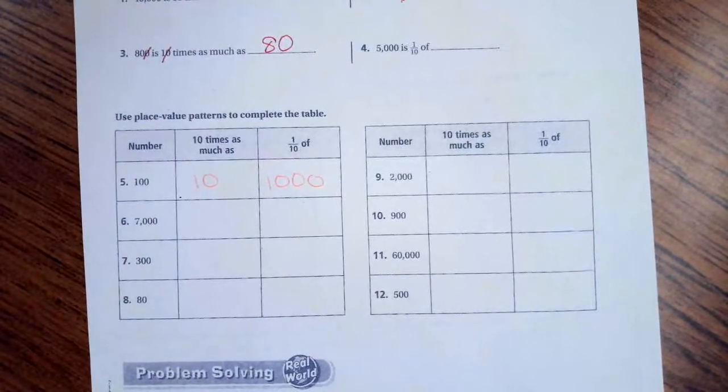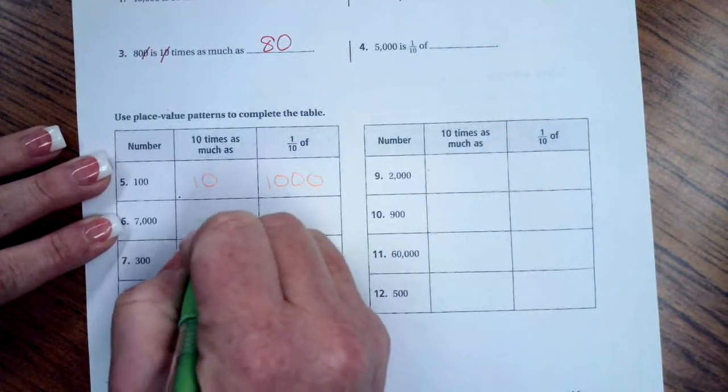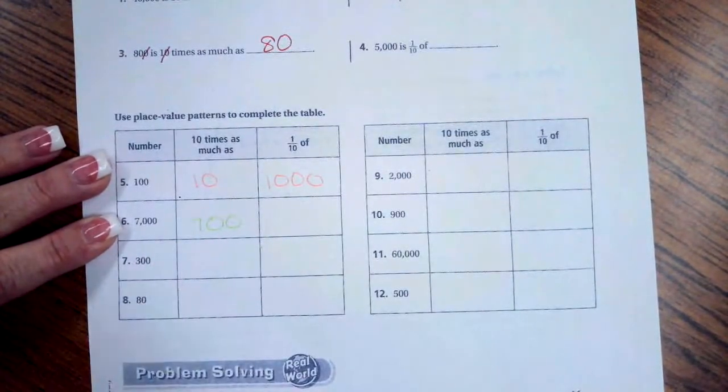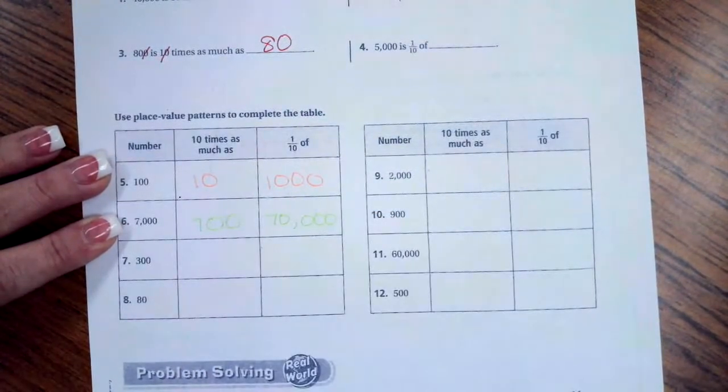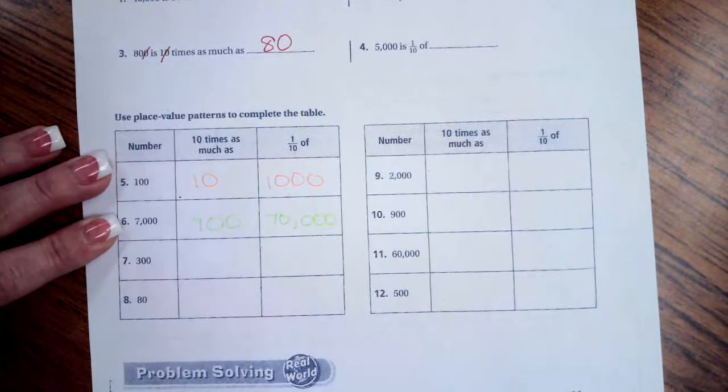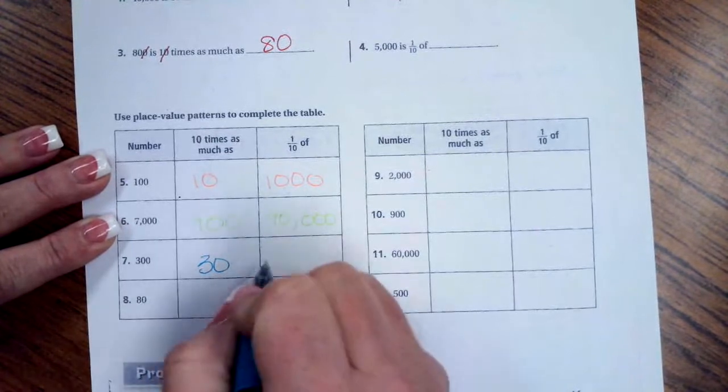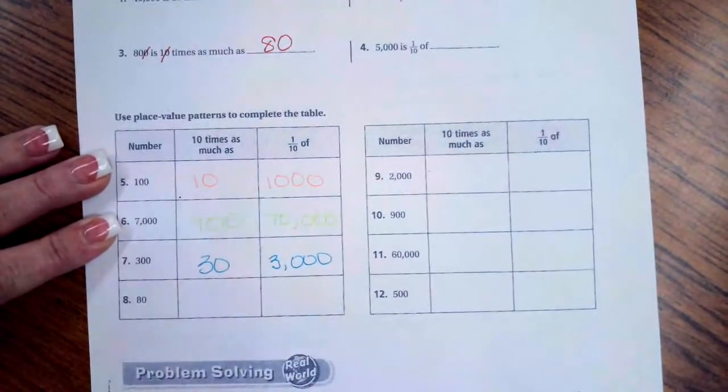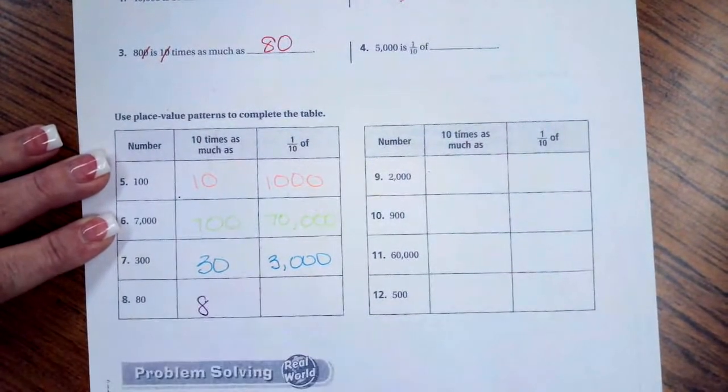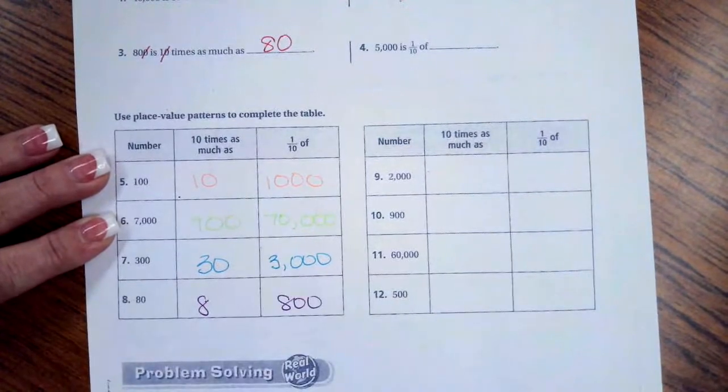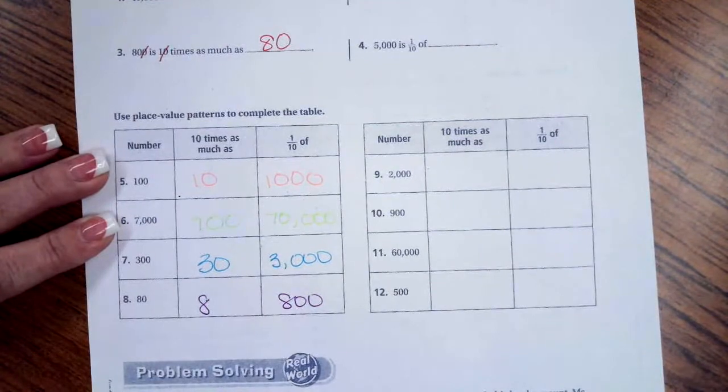I'm going to do the same thing for 7,000. I'm going to take a zero off for the first column, so I have 700, and then I'm going to add a zero for the one tenth of. Same thing for the next one. Take a zero off, put a zero on. Same thing with these guys, so I'm going to let you go ahead and do 9 through 12.